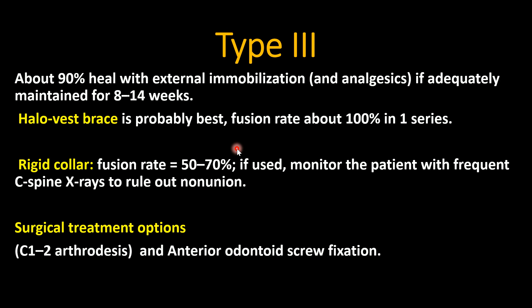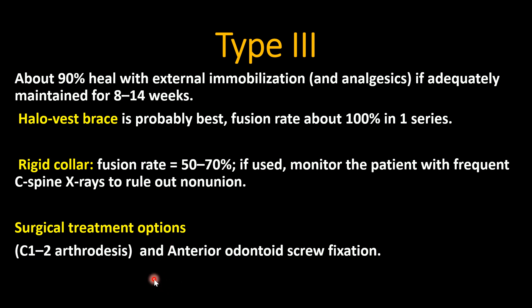For Type 3 fractures, about 90 percent heal with external immobilization alone and analgesics if adequately maintained for 8 to 14 weeks. Halo vest brace is probably best, with a fusion rate reaching 100 percent. Rigid collar has a fusion rate of 50 to 70 percent. Surgical treatment options include C1-C2 arthrodesis and anterior odontoid screw fixation.